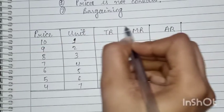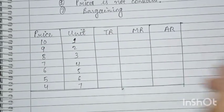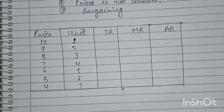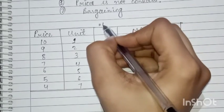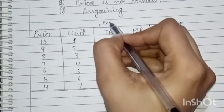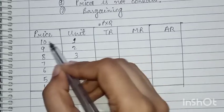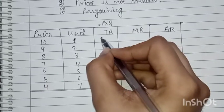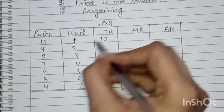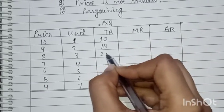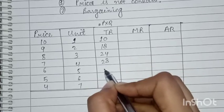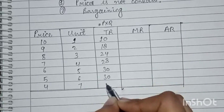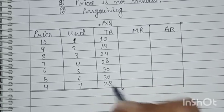Now what do we do for TR? TR equals P into Q. So we calculate: 10×1=10, 9×2=18, 8×3=24, 7×4=28, 6×5=30, 5×6=30, 4×7=28. TR first increases, then becomes constant, then decreases.